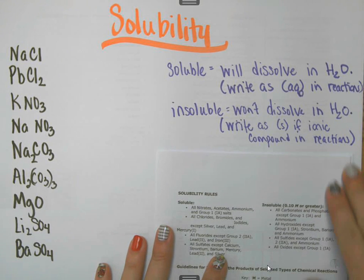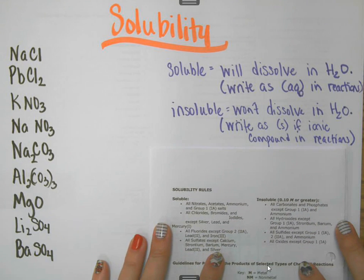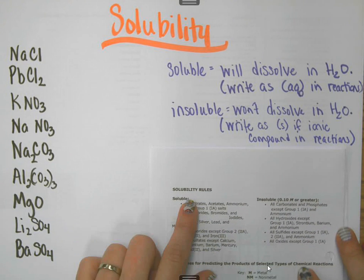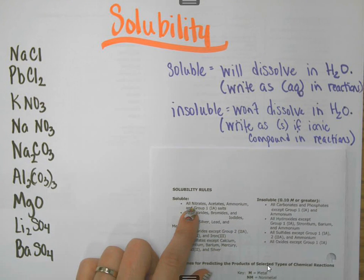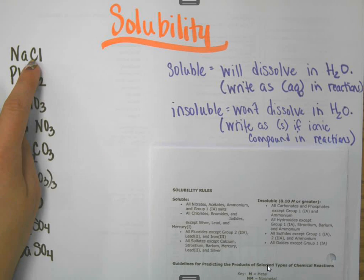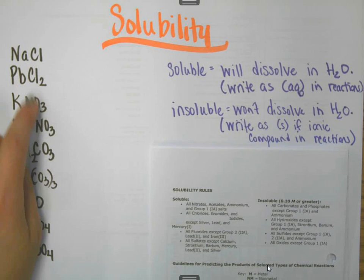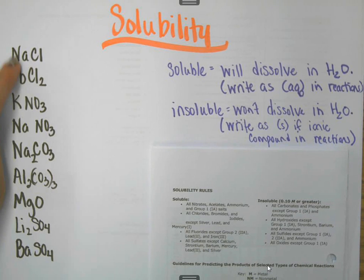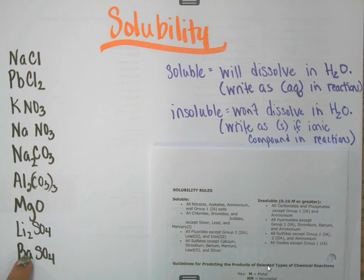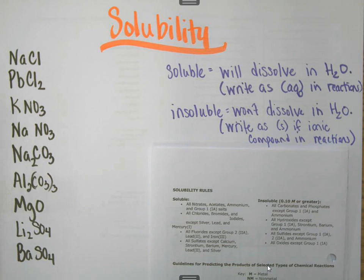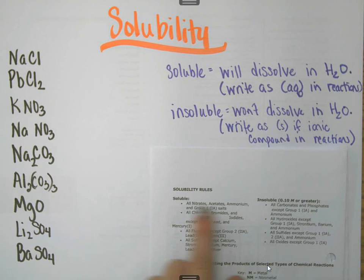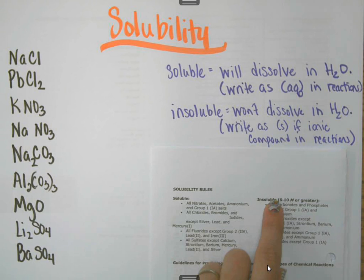This is the North Carolina reference table if you're curious. If you look at the solubility rules, all you're simply going to do is find the anion. It's not about the cation in each formula — it's all about the anions. You have two columns here: the soluble column and the insoluble column.